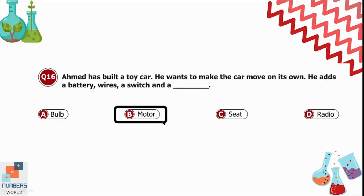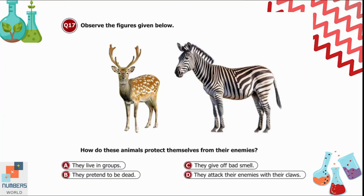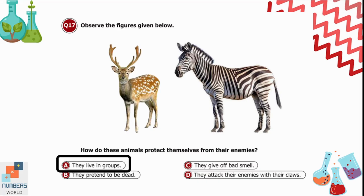Question 17: Observe the figures — how do these animals protect themselves from their enemies? Option A is they live in groups — correct, because deer and zebras live in groups. Option B is they pretend to be dead — not right. Option C is they give off a bad smell. Option D is they attack with claws — these herbivores do not have claws. Option A is correct.